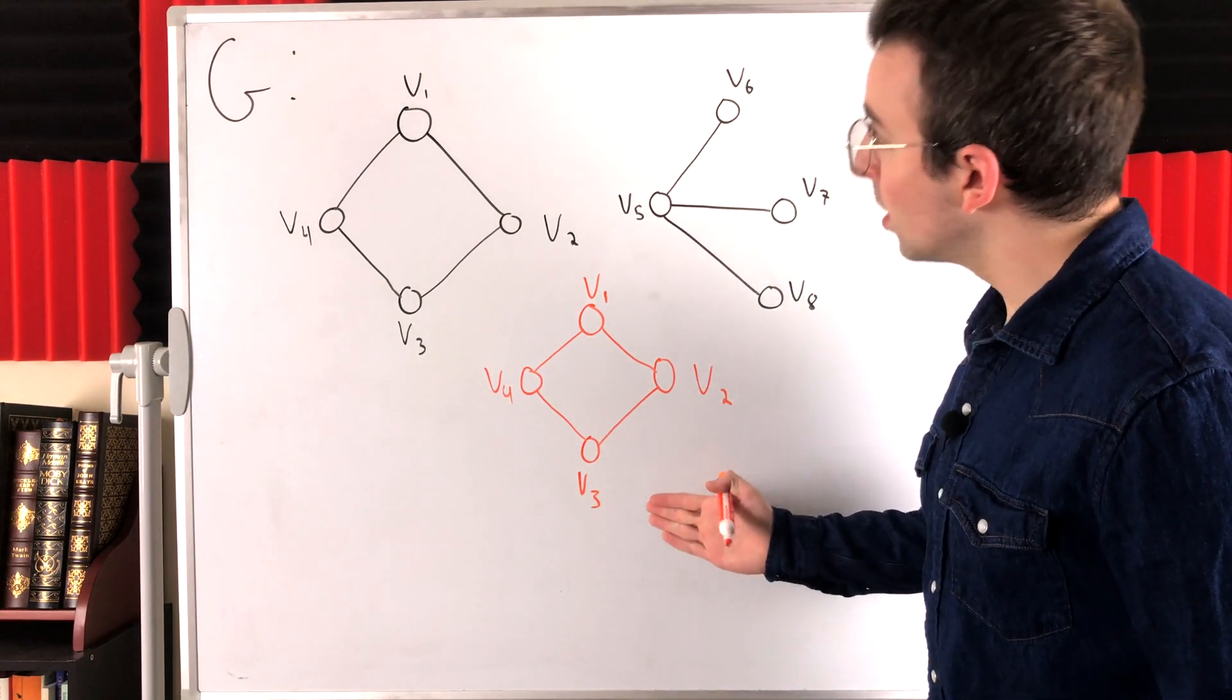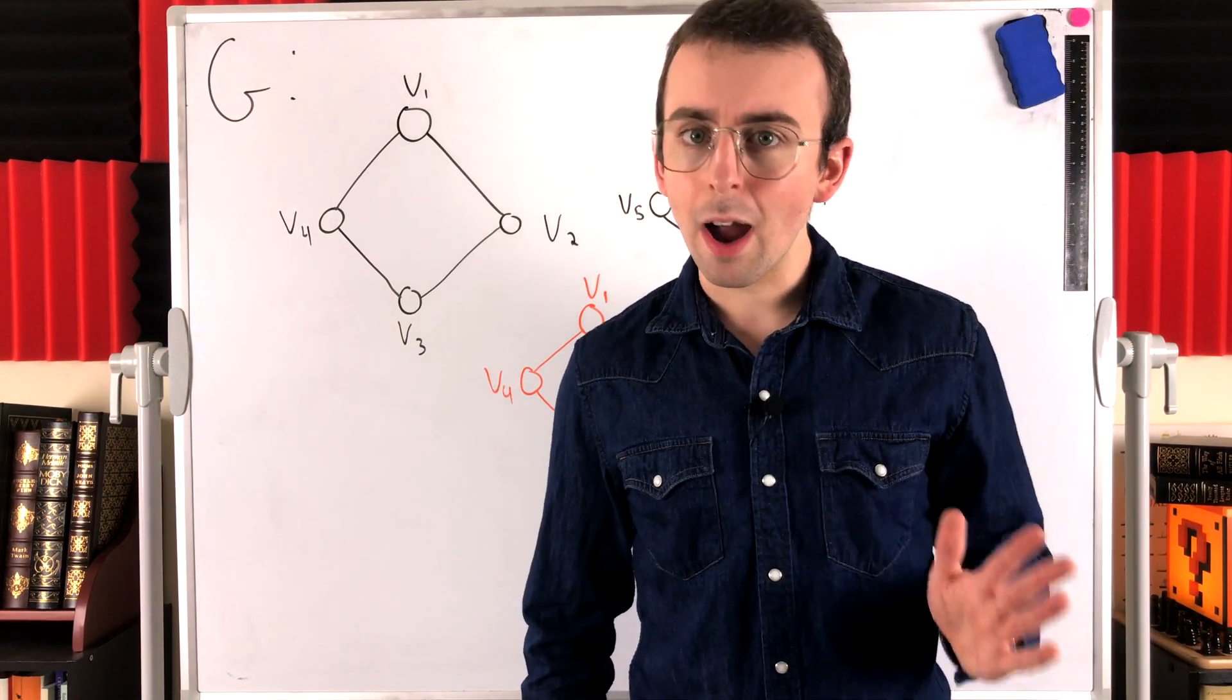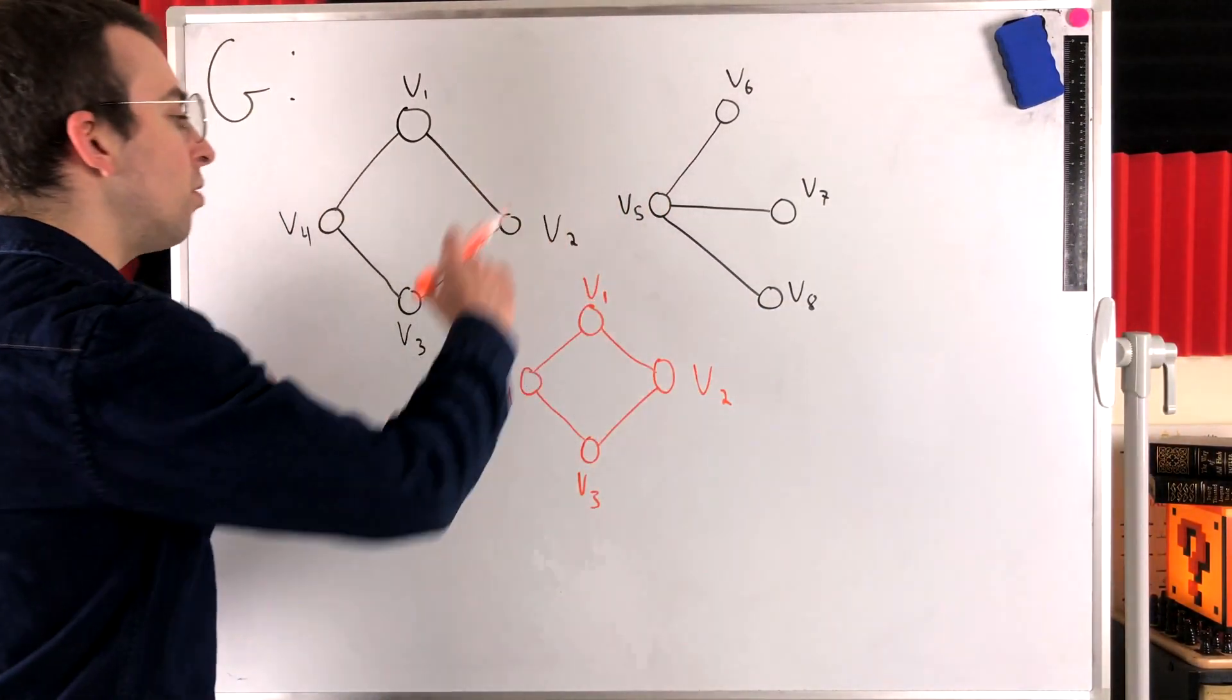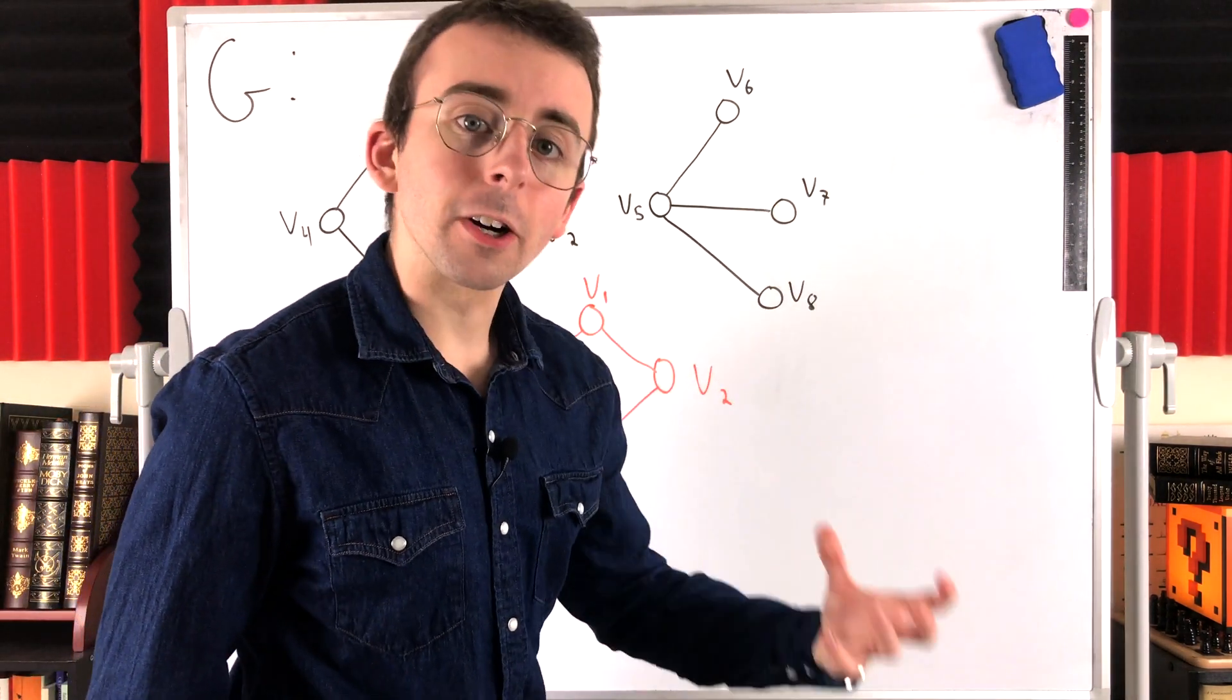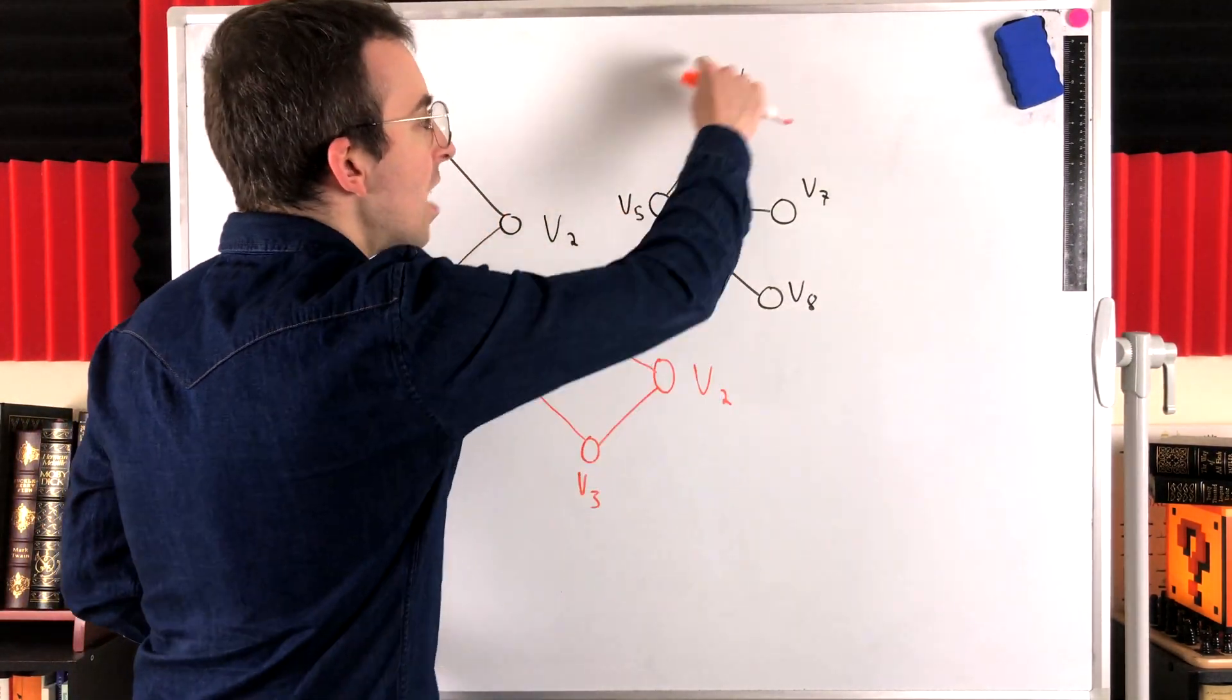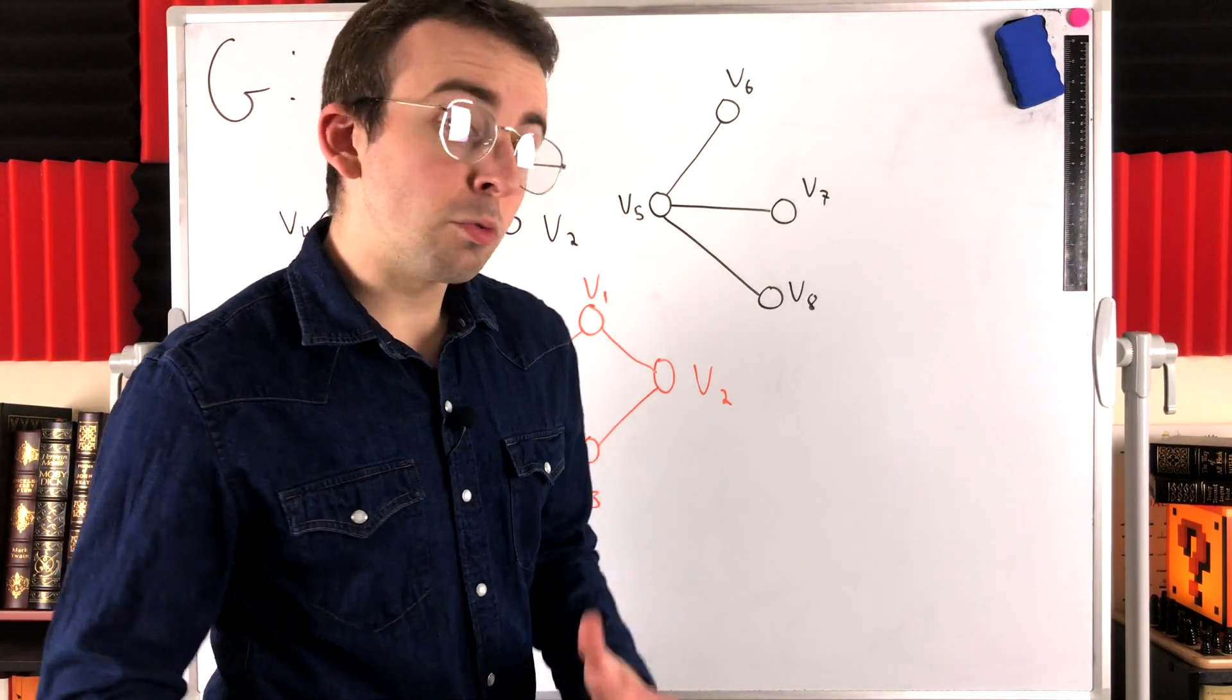It's a connected subgraph, and it's maximal because it's not a proper subgraph of any other connected subgraph of G. There are no vertices or edges of G that we could add to this subgraph to get a bigger connected subgraph. All of the other vertices and edges in G are over here. And no matter which of these vertices and edges we add to this subgraph, the resulting subgraph will be disconnected.